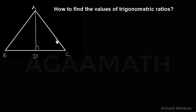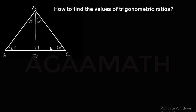In an equilateral triangle, each angle is 60 degrees. So here, as AD is a bisector, we get that this angle is 30 degrees as well as this is also 30 degrees, and this angle is 90 degrees. So obviously we got a right angle triangle.